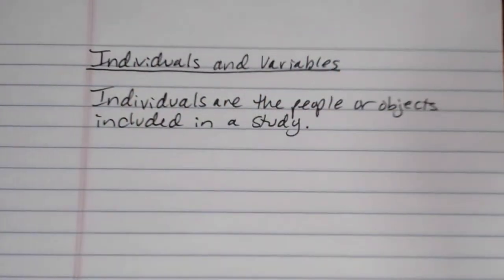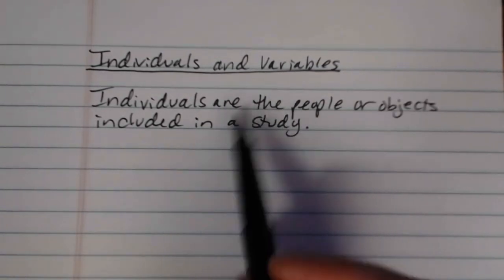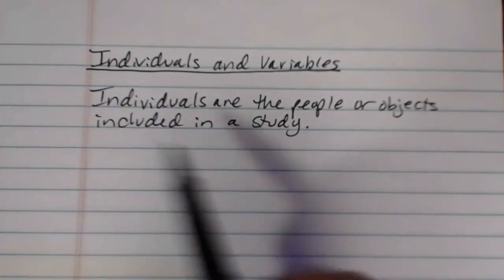individuals are the people or objects included in a study. So they could be people, if that happens to be the thing that we are studying, or they could be cars, they could be bacteria, they could be medications, they could be patient records, any kind of thing that we're actually studying or we are including in the study, those are the individuals.